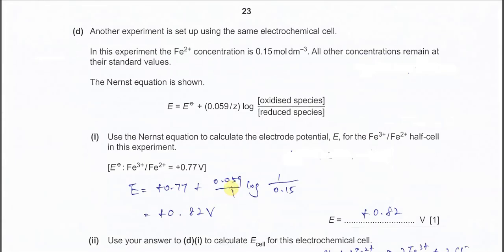Part D: Another experiment is set up using the same electrochemical cell but different concentration for Fe²⁺. Now Fe²⁺ is no longer one molar per dm³, it becomes lower. The other concentrations remain unchanged, meaning Fe³⁺ is still one molar per dm³. Now use the Nernst equation given here.